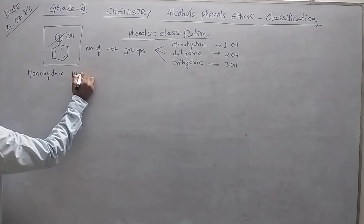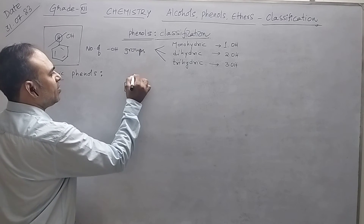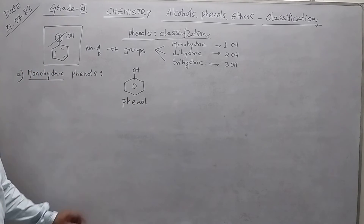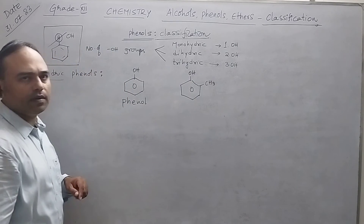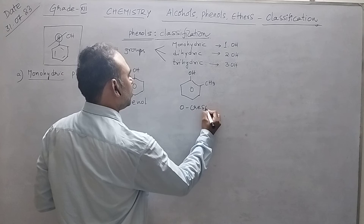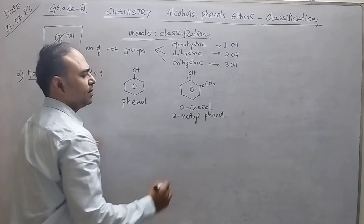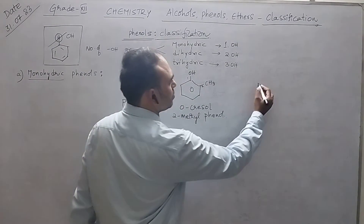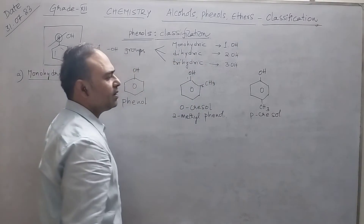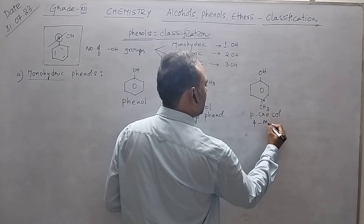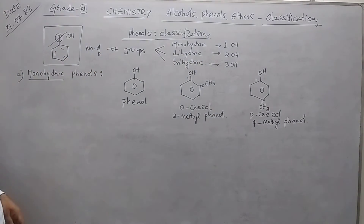Monohydric phenols have only one OH group. Examples include: first, phenol (also called hydroxybenzene); second, ortho-cresol, where a methyl group is at the ortho position — its IUPAC name is 2-methylphenol; and third, para-cresol, with a methyl group at the para position — IUPAC name is 4-methylphenol. These all have one OH group, hence they are monohydric phenols.